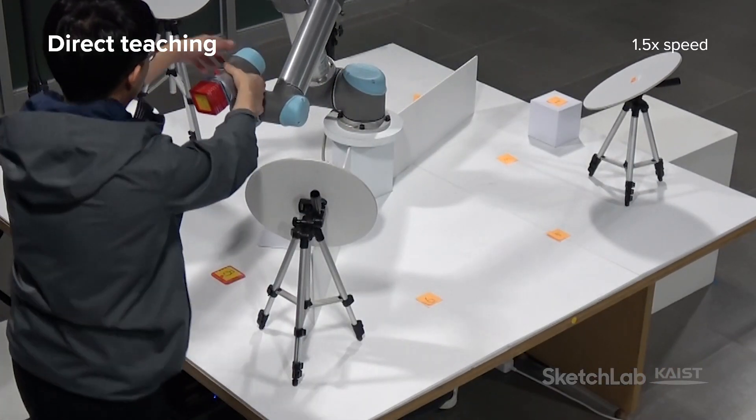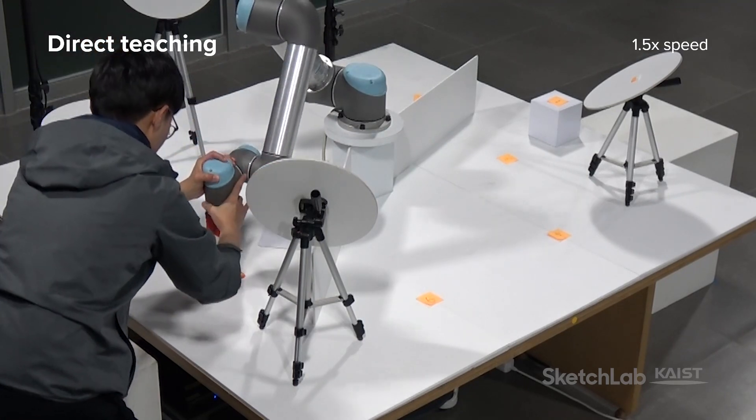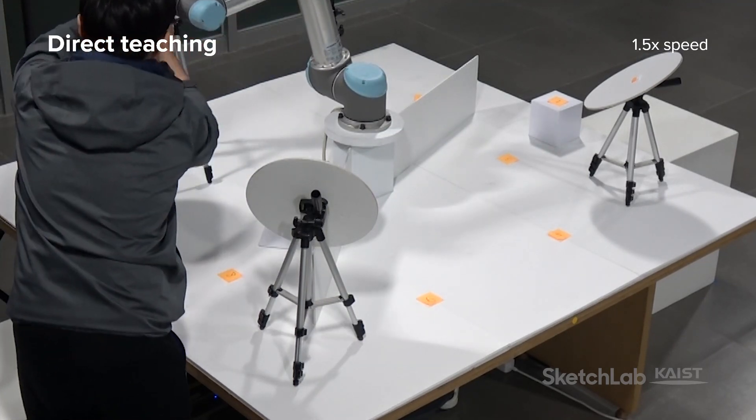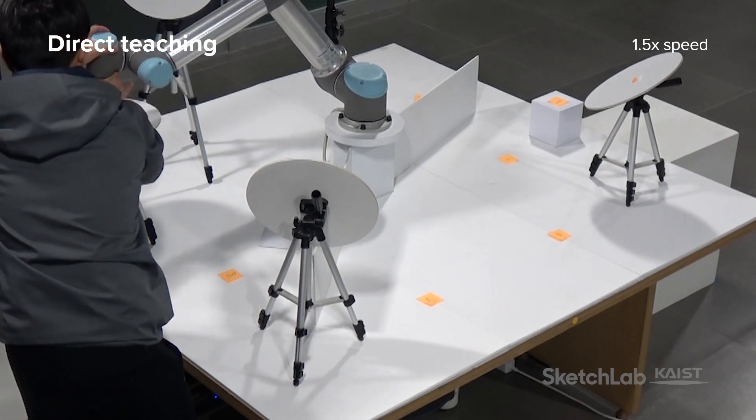However, direct teaching can still be challenging when the robot is a little too far away, or when there are obstacles between the robot and the user, or when the movement requires rotation of multiple joints.